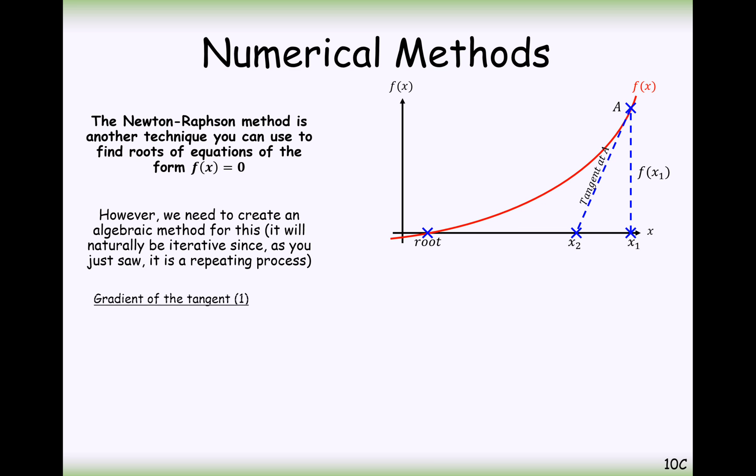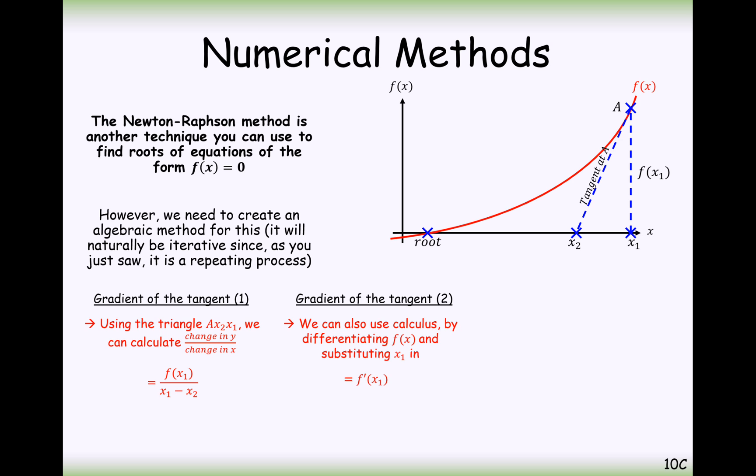So what is the formula going to be then? Well, the gradient for this line here, the tangent gradient, we can kind of think of it as difference in y divided by difference in x. So in this case here it's going to be f(x₁) divided by x₁ minus x₂. And the gradient, we can also consider it as the derivative, the derivative where we have the coordinate of x₁, so it would be f'(x₁), the derivative at x₁. So we're going to be using gradients here and differentiation.